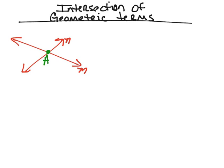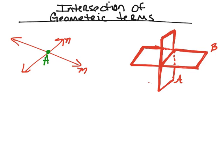When we're looking at two lines and they intersect each other, they will always intersect each other at a specific point. But what if we have two planes that intersect each other?